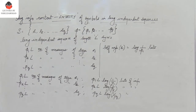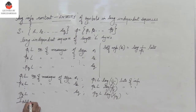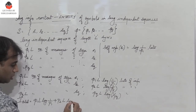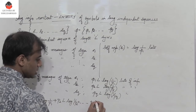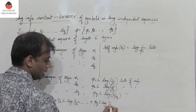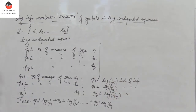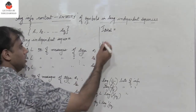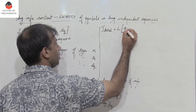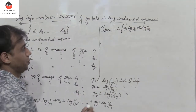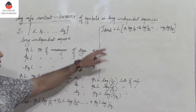The total self-information is all of them added up: I_total = P1·L·log(1/P1) + P2·L·log(1/P2) + ... + PQ·L·log(1/PQ). Since L is common, we can take it outside: I_total = L × [P1·log(1/P1) + P2·log(1/P2) + ... + PQ·log(1/PQ)], which can be written as L × Σ(i=1 to Q) Pi·log(1/Pi).